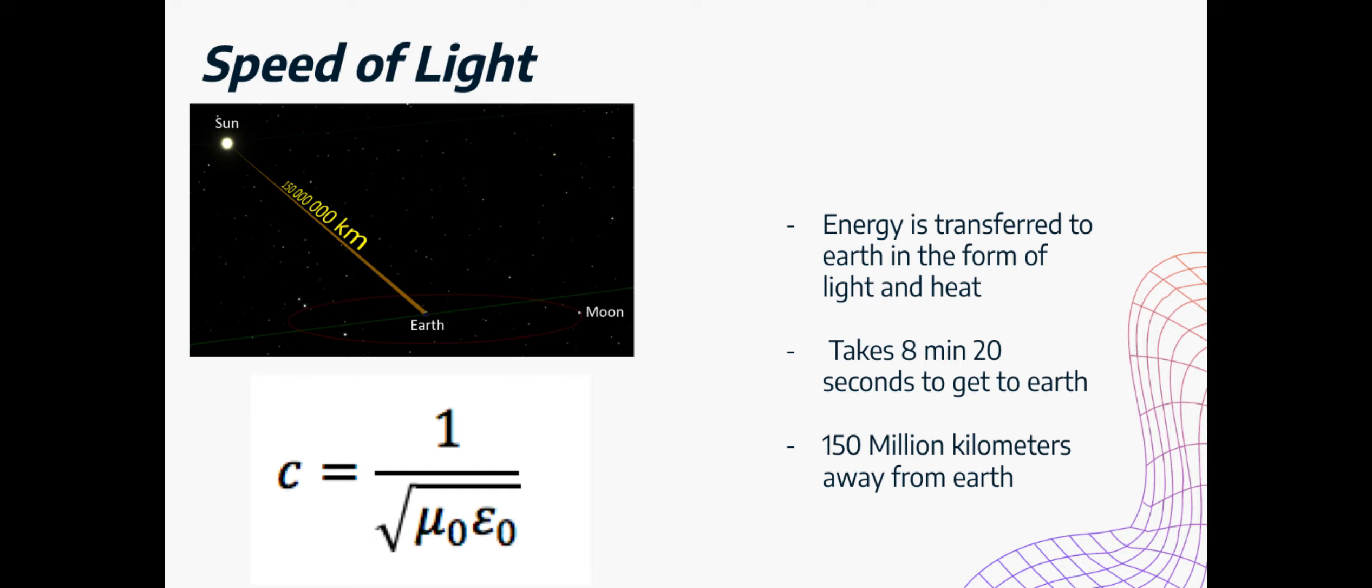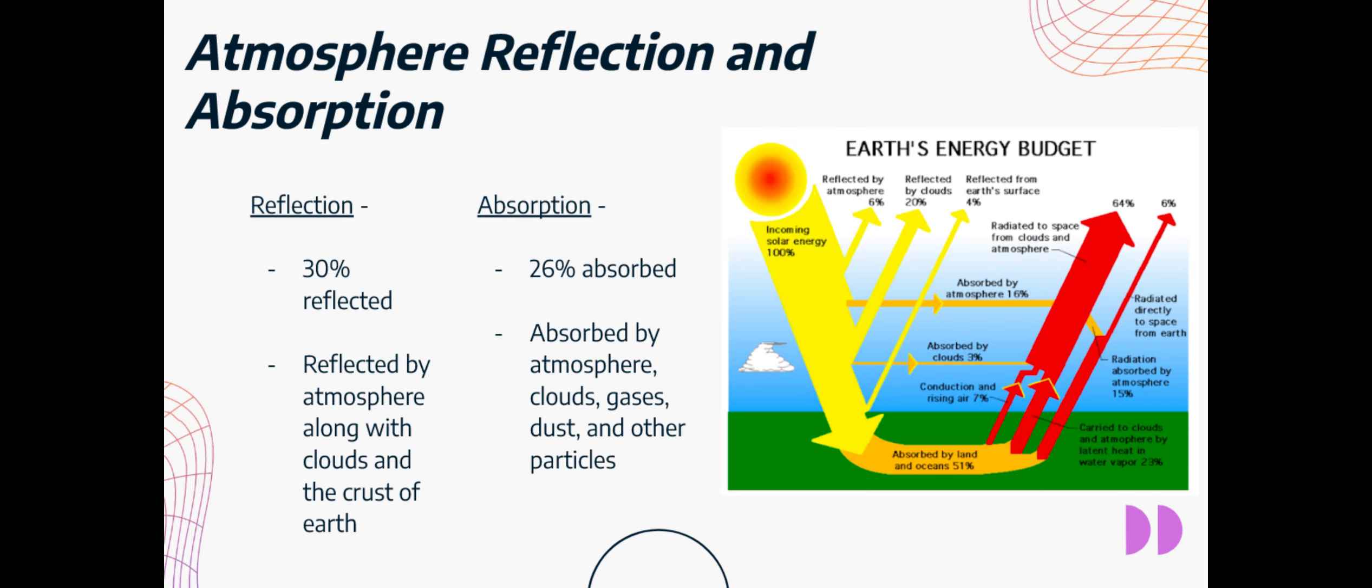By the time it makes it to earth, only 0.0000005% of sun's total energy produced makes it into the earth's cycles, such as the carbon cycle. Of that small percentage of energy making it to earth, another 30% gets reflected back into space by the atmosphere along with clouds and the crust of the earth. Another 26% of energy gets absorbed by clouds, gases, dust, and other particles in the atmosphere. This means that around 46% of that 0.0000005% of energy does not make it to the cycles on earth.